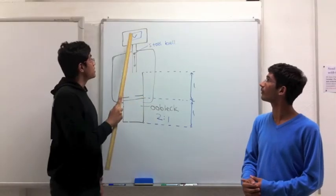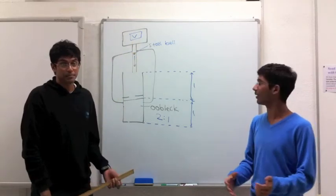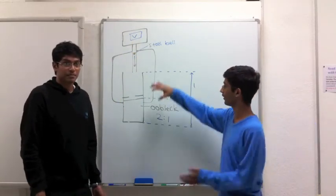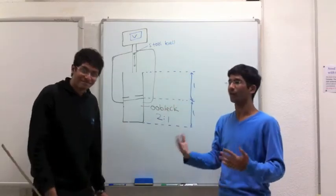The independent variable is the impact velocity of the steel ball, which is controlled by the gun. The dependent variable is going to be the time it takes for the ball to cover either this distance L or this distance L, depending on whether it bounces or sinks.